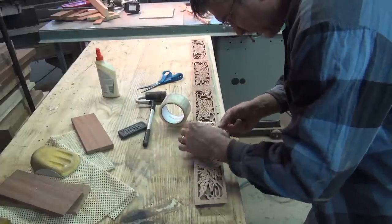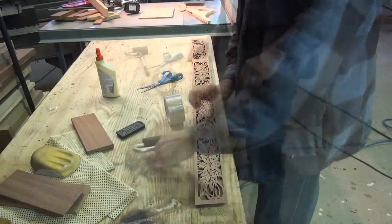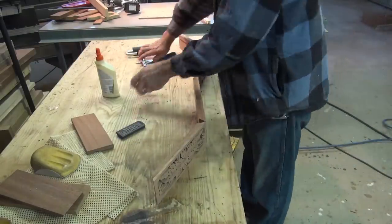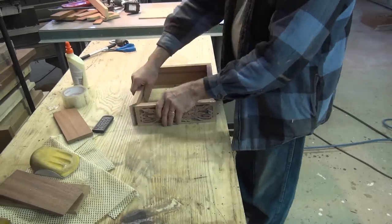The only reason a miter joint is stronger than a butt glue joint is a miter has more glue surface, so use all of it. I don't know of any easier way to glue this up.